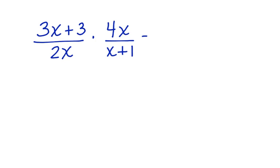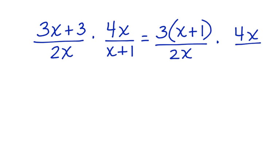3x plus 3 can be factored. We can take out the greatest common factor of 3 and then we get left with x plus 1 over 2x times 4x over x plus 1. This second rational expression stays the same because it can't be factored.